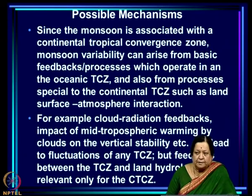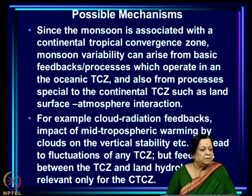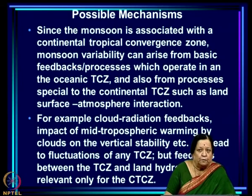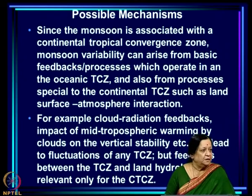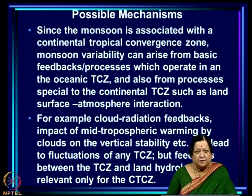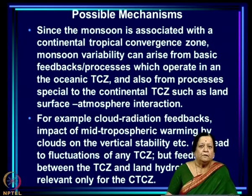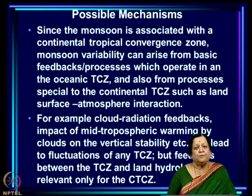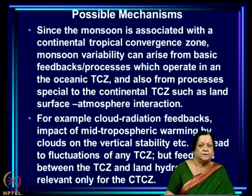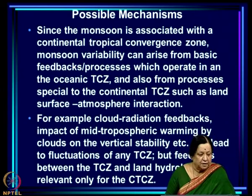In later lectures the physics will be discussed in greater detail, but it is worth mentioning the feedbacks that could lead to the observed fluctuations. Since the monsoon is associated with the continental tropical convergence zone, monsoon variability can arise from basic feedbacks operating in an oceanic TTCZ and also from processes special to the continental TTCZ, such as land surface–atmosphere interaction.